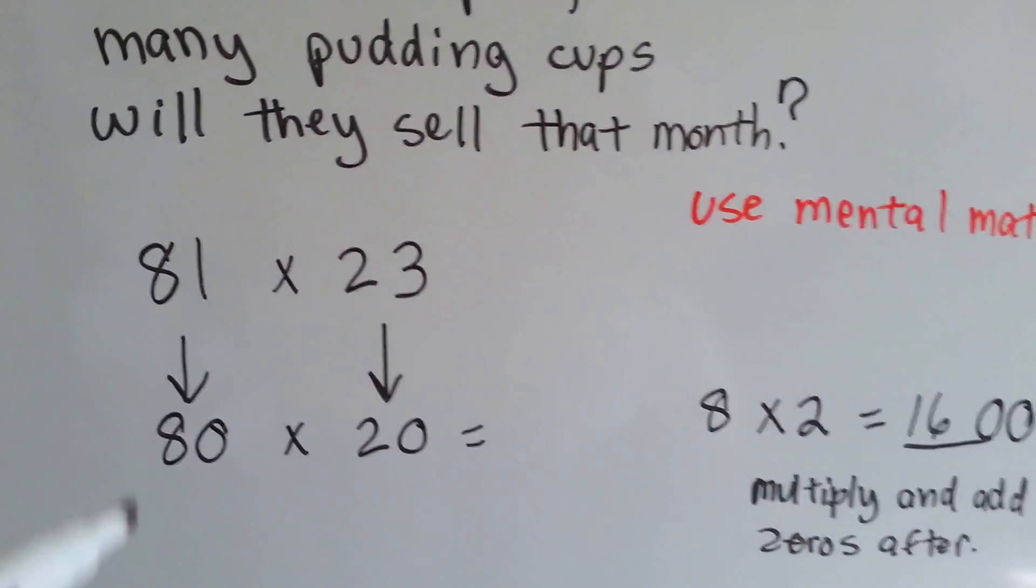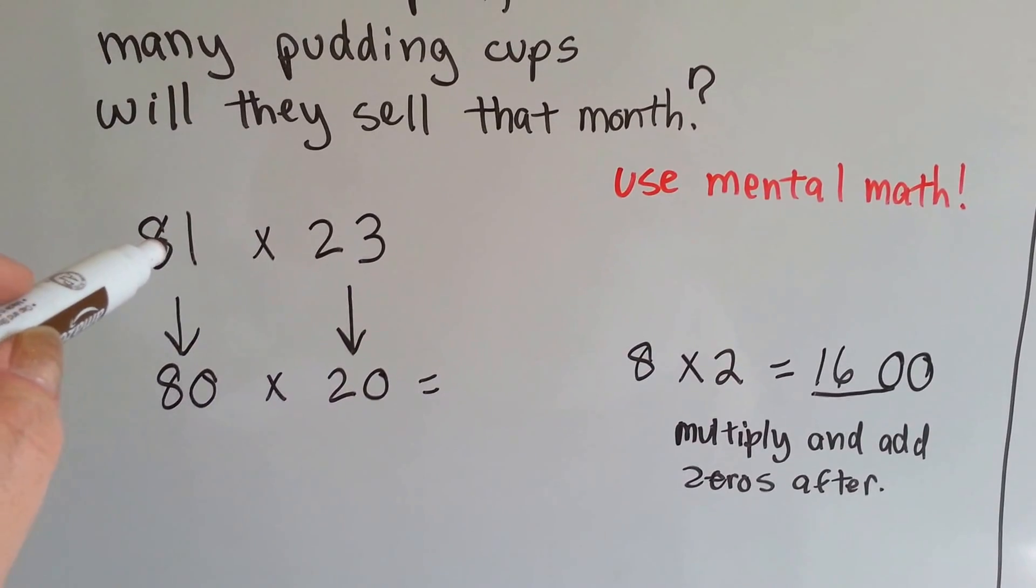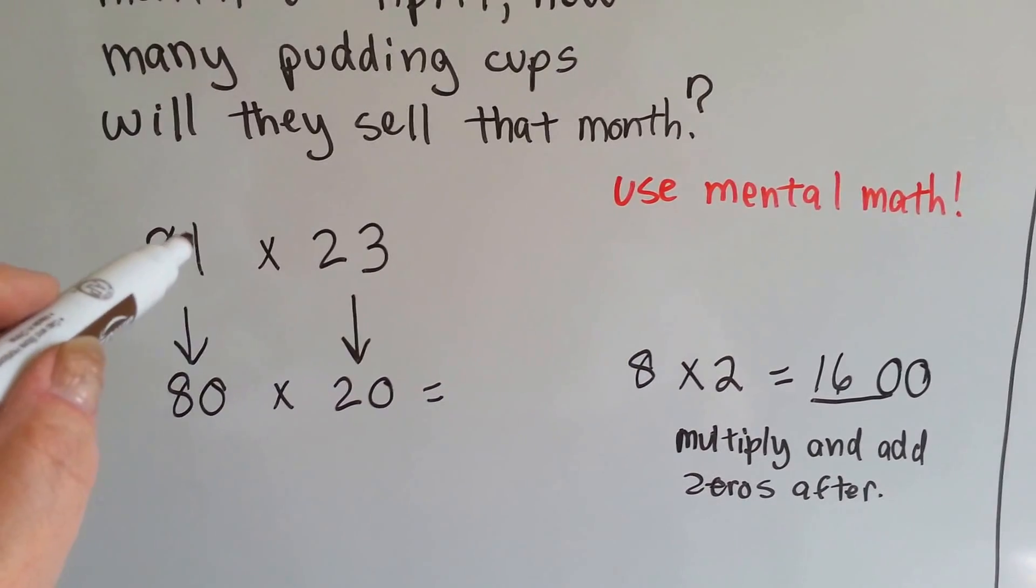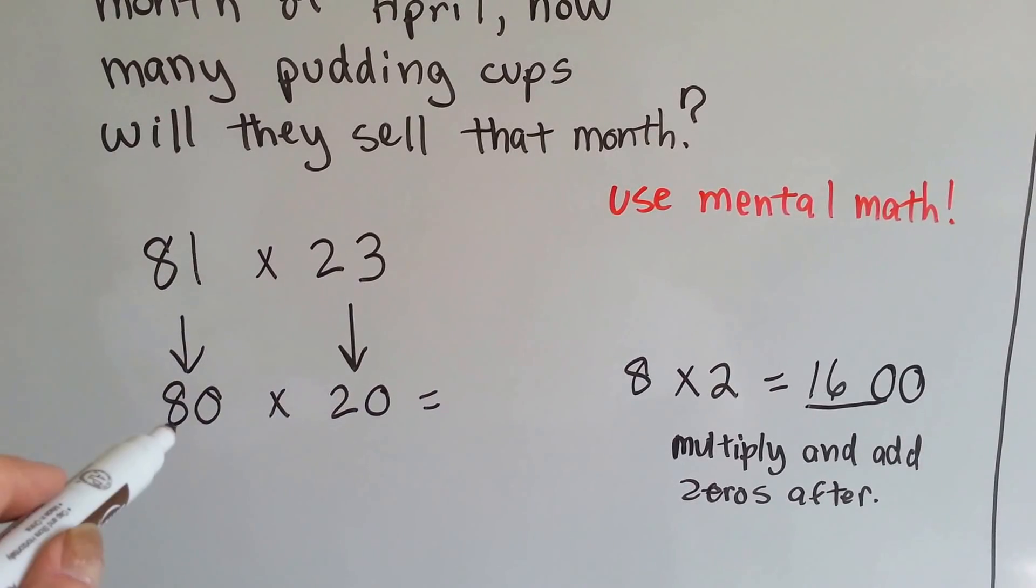We can use mental math and we can estimate. Eighty-one is estimated to be eighty, because the one rounds down. It becomes a zero, and the eight stays the same.